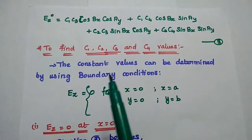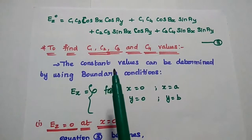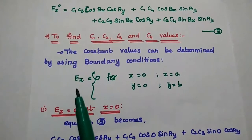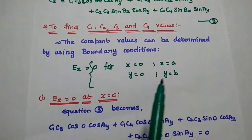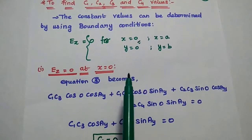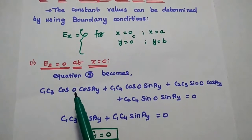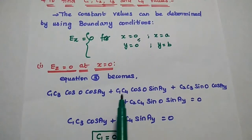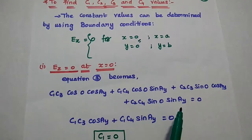Next we find the values of c1, c2, c3, and c4 using boundary conditions. At the boundary values, EZ becomes 0: EZ = 0 at x=0, x=a, y=0, and y=b. Applying the first boundary condition EZ = 0 at x = 0 in the third equation: c1c3 cos 0 cos ay + c1c4 cos 0 sin ay + c2c3 sin 0 cos ay + c2c4 sin 0 sin ay = 0. Since cos 0 = 1 and sin 0 = 0, this reduces to c1c3 cos ay + c1c4 sin ay = 0.